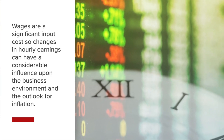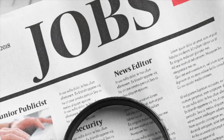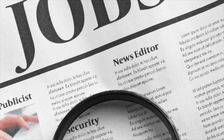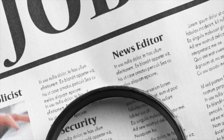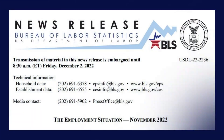The US Bureau of Labor Statistics Employment Situation Report, otherwise known as the Jobs Report, which includes average hourly earnings, is an important source of information covering labour market activity. The report is issued at 8:30am Eastern Time on the first Friday of the month and tracks the hourly earnings of all private employees on a gross basis.